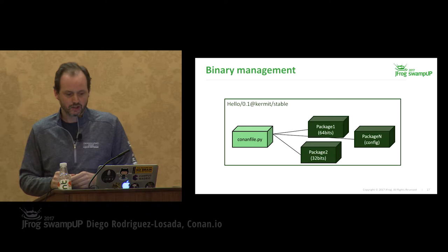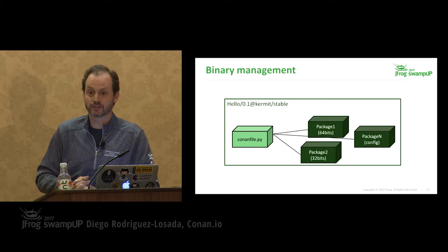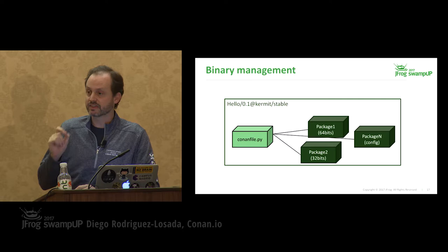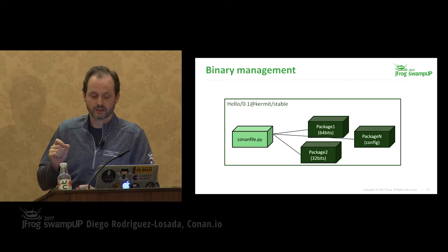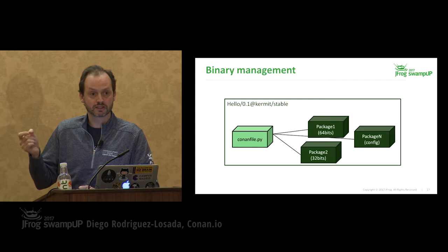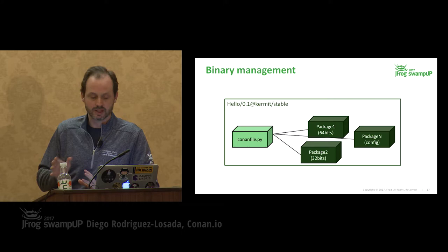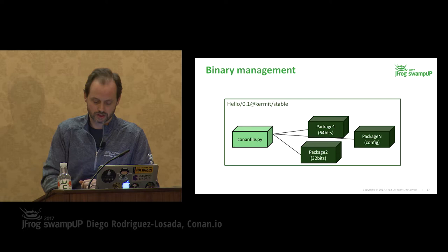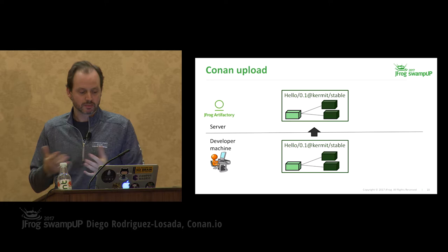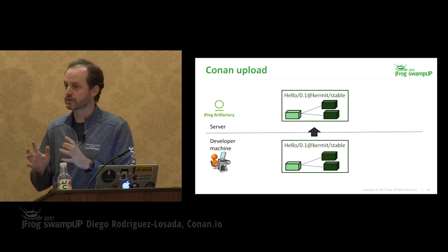One of the keys in Conan is this structure: you have a package recipe — a conanfile.py Python script — and from that single recipe for a given library you can build any number of package binaries. Building for 64-bit gives one binary; building for 32-bit gives a different binary; and so on for build types, static vs. dynamic libraries. All binaries are linked to the recipe that created them. If you develop on your own machine and create two binaries, you can upload them to Artifactory and your team can reuse those binaries without needing to rebuild themselves.